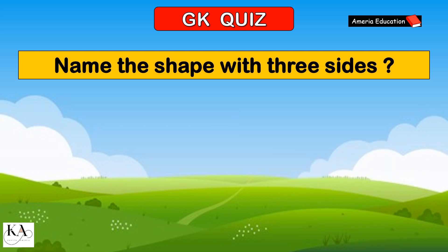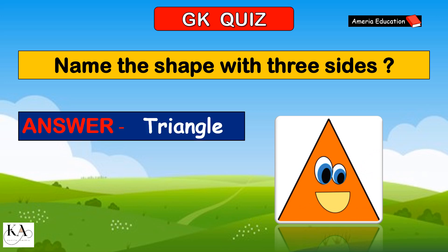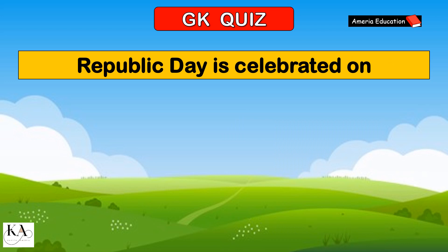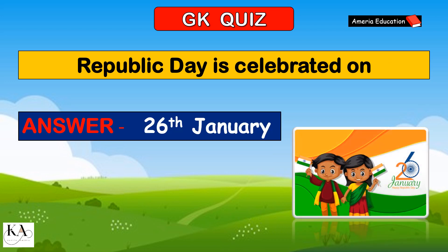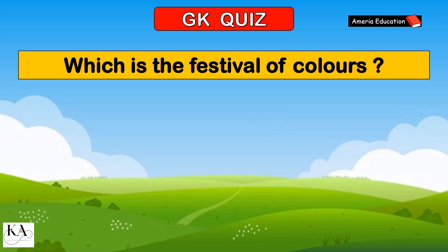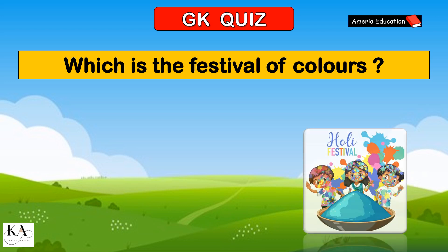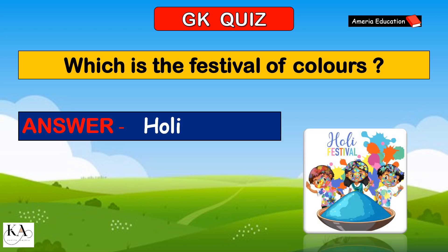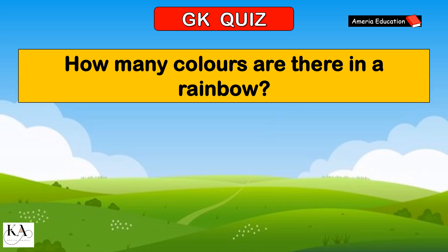Name the shape with three sides. Triangle. Republic Day is celebrated on 26th January. Which is the festival of colors? Holi.